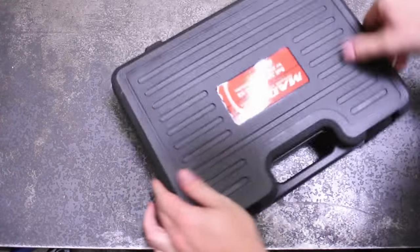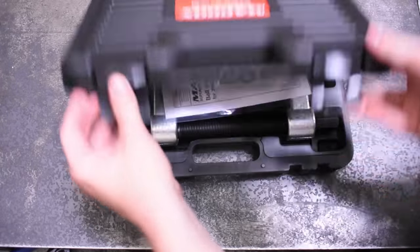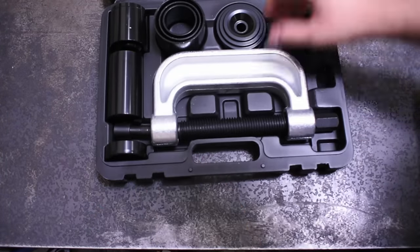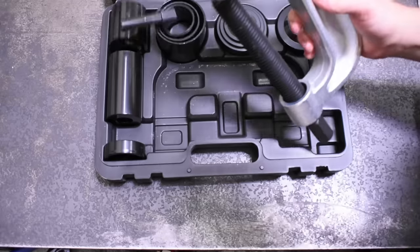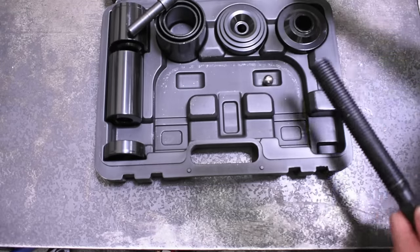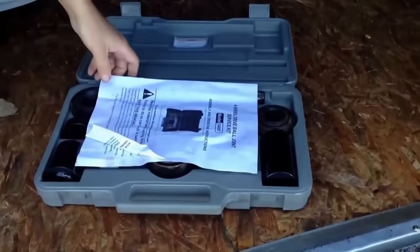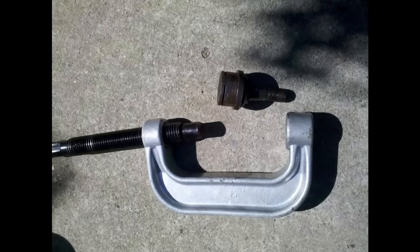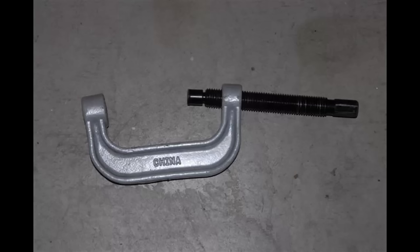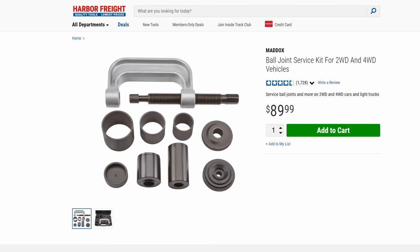Today for our debut episode, we're testing what are likely the best-selling ball joint puller sets in the US. The first example is from Harbor Freight donning their pricier Maddox name, model MA10-1. Their previous Pittsburgh set was famously garbage and would bend if you looked too hard at it.